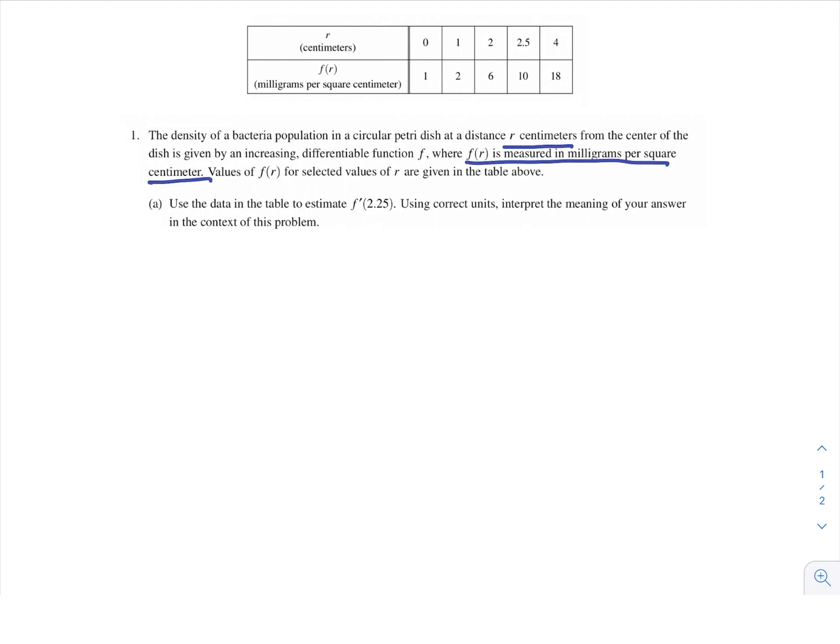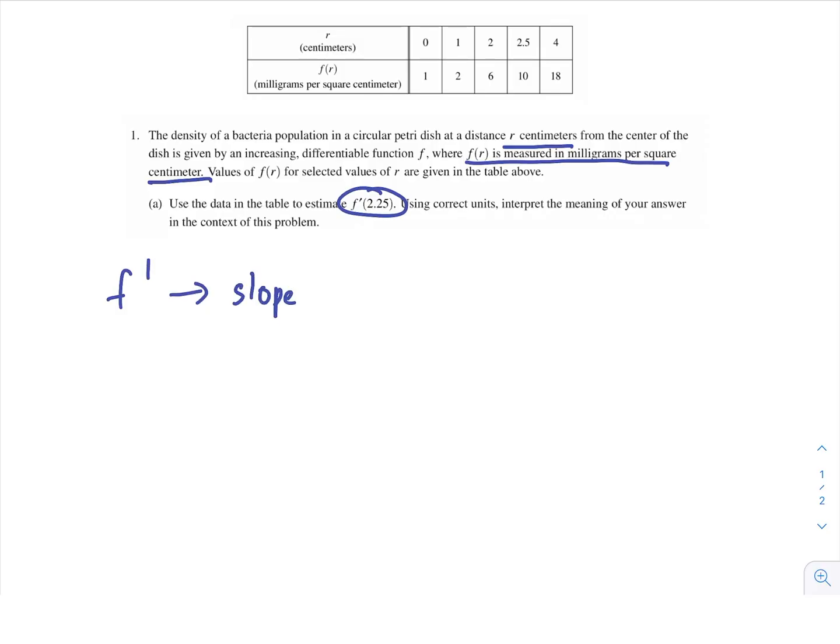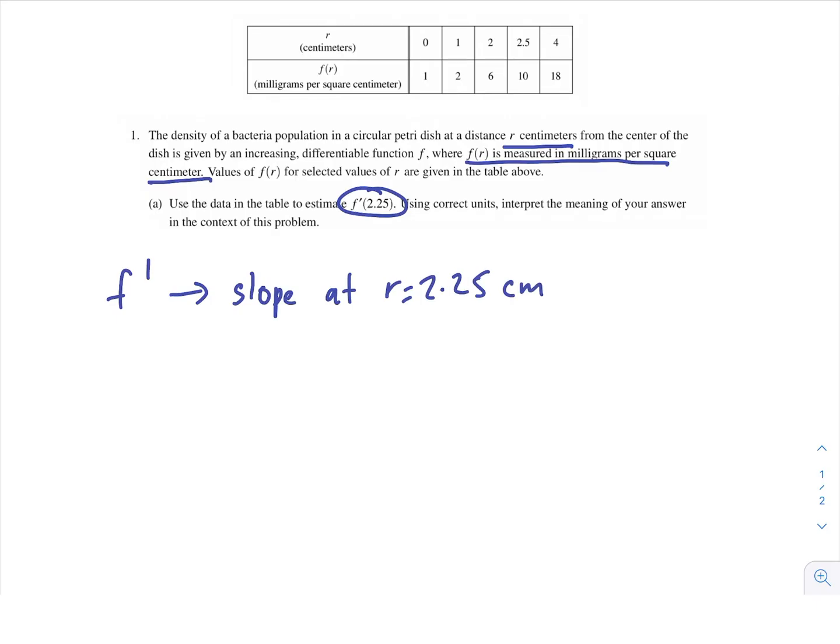Our problem is saying to estimate f'(2.25), and anytime I see f prime, what I immediately think is the slope. And specifically, this problem is asking for the slope at r equals 2.25 centimeters. So when we want to find slope, we use our slope equation. So we plug in two values, two points. So in this equation, the two points would be (x1, f(x1)) and (x2, f(x2)), and then we get the slope at that point.